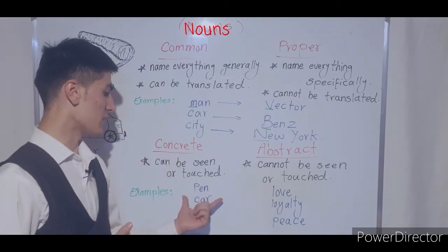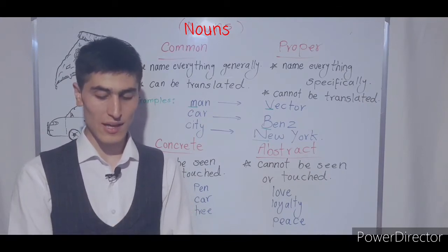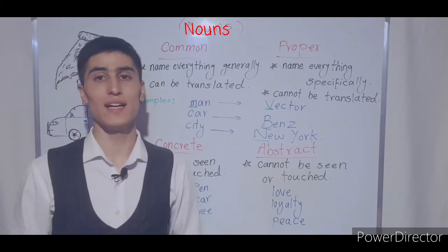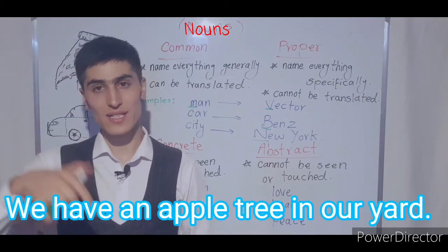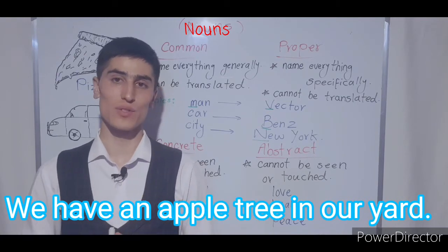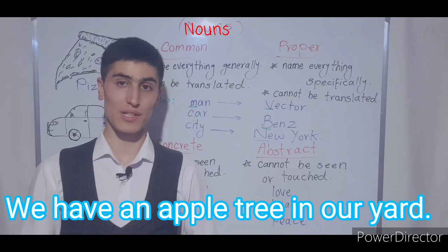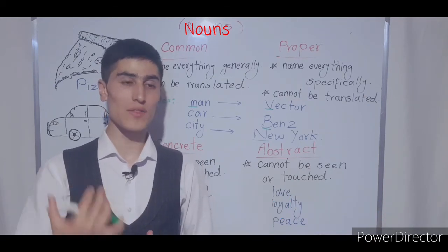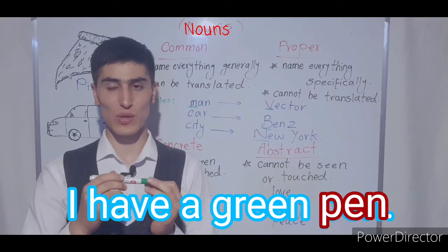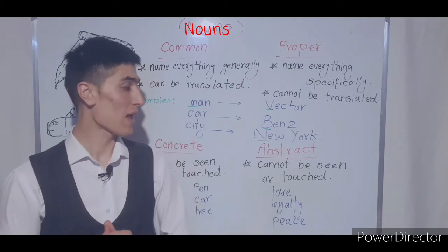Here are some concrete nouns: pen, car, or tree. A marker, for example, is a concrete noun because I can see it, I can touch it, and it has physical existence. For example: 'We have an apple tree in our yard.' Here 'apple' is a noun and 'tree' is also a noun; they both make a compound noun and are both concrete nouns because they have physical existence. Another example: 'I have a green pen.' Here 'pen' is a noun and it is a concrete noun because it has physical existence.